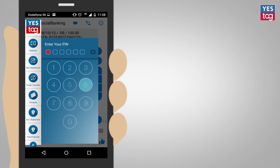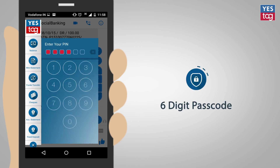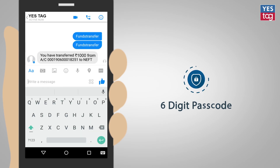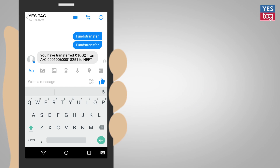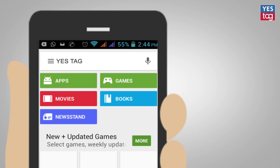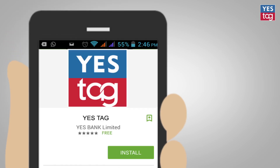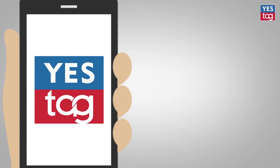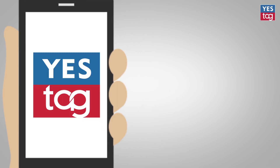Check status and transfer funds to any registered beneficiary up to 5,000 rupees — all this can be done by just using a six-digit numeric passcode set during registration. Install the YesTag app from Google Play Store and Apple App Store.